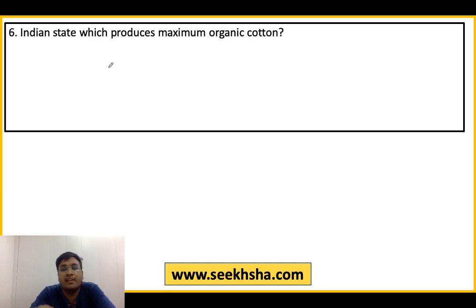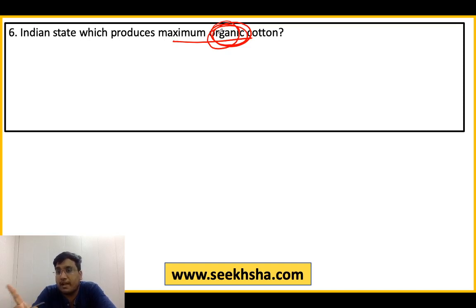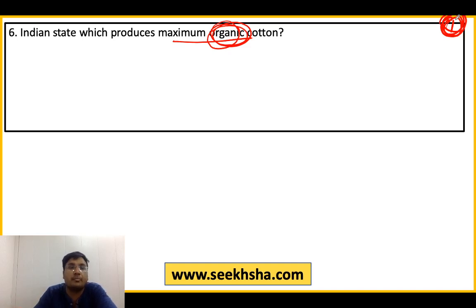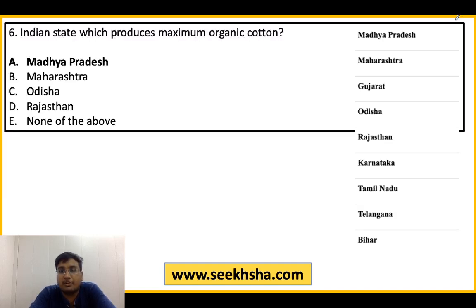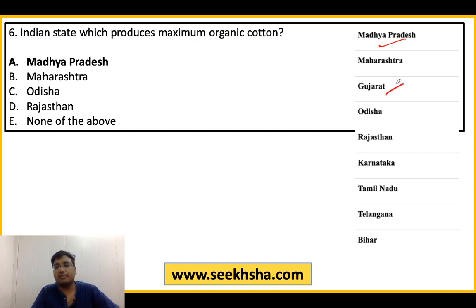Next question: Which Indian state produces maximum organic cotton? Note — यहाँ maximum cotton नहीं, maximum organic cotton पूछा गया है। Option A: Madhya Pradesh, B: Maharashtra, C: Odisha, D: Rajasthan, E: None of the above. The right answer is Option A: Madhya Pradesh. Ranking में: #1 Madhya Pradesh, #2 Maharashtra, #3 Gujarat, #4 Odisha। Topper आपका MP है।